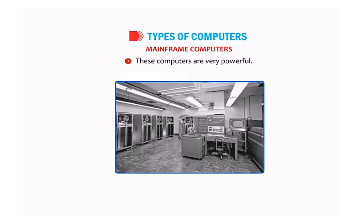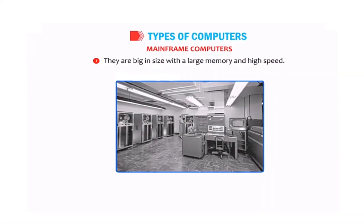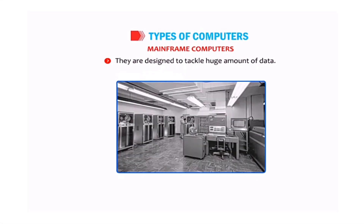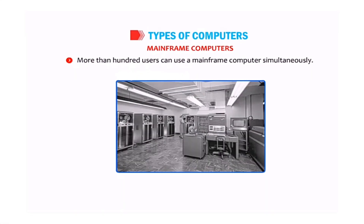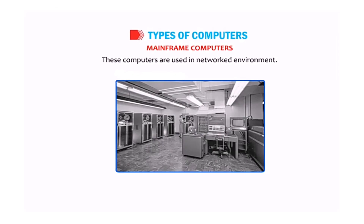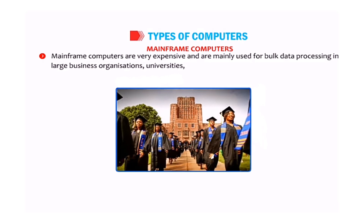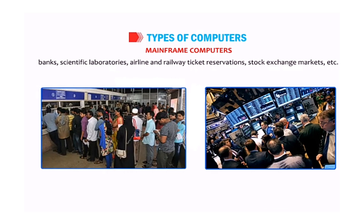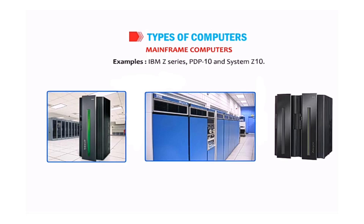Mainframe computers are very powerful, usually big in size with large memory and high speed, designed to handle huge amounts of data. They can be used simultaneously by more than 100 users and operate in networked environments. Mainframe computers are very expensive and are used for bulk data processing in large business organizations, universities, banks, scientific laboratories, airline and railway ticket reservation, and stock exchange markets. Examples include IBM Z Series, PDP-10, and System Z10.